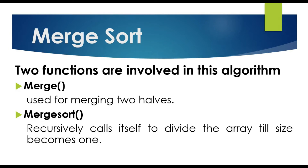Merge Sort has two functions involved in this algorithm. The first one is the Merge function, which is used for merging two halves. This function is used to combine two or more array values — we can identify it using the word 'merge,' which means to combine.